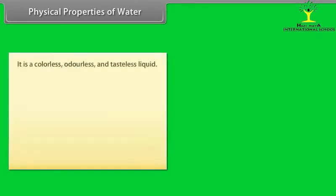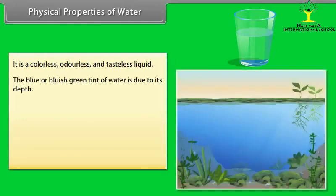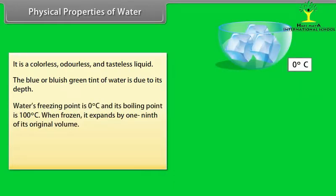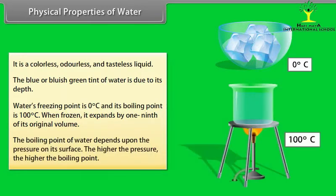Physical properties of water: It is colourless, odourless and tasteless liquid. The blue or bluish-green tint of water is due to its depth. Water's freezing point is 0 degree Celsius and its boiling point is 100 degree Celsius. When frozen, it expands by one-ninth of its original volume. The boiling point of water depends upon the pressure on its surface. The higher the pressure, the higher the boiling point.